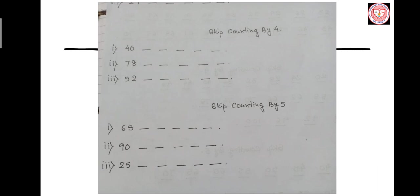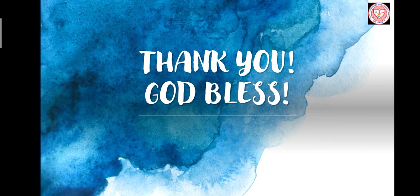Now let's recapitulate once again about skip counting. Skip counting is when a number is increased by the same value each time. Skip counting helps with addition, subtraction, multiplication and division. It is nothing more than just counting by skipping numbers — just hopping, skipping and jumping over the numbers. It helps us to count faster. Thank you, children.